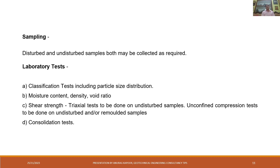Both disturbed and undisturbed samples may be collected as required. Laboratory tests include classification tests including particle size distribution, moisture content, density and void ratio. For shear strength, triaxial tests need to be done on undisturbed samples. Unconfined compression tests need to be done on undisturbed or remoulded samples. Consolidation tests need to be done for settlement analysis.